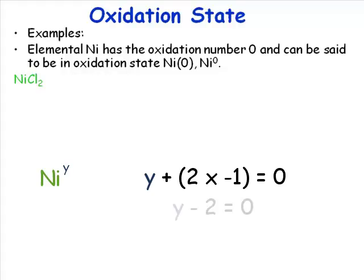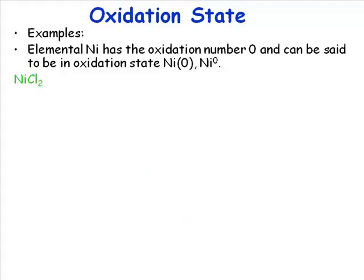So y - 2 is equal to zero. So if we really have to push the algebra to its limits, we need to add two to both sides of this equation. So we're going to get y is equal to +2. So there are no surprises to you there. But that is how we do this systematically.